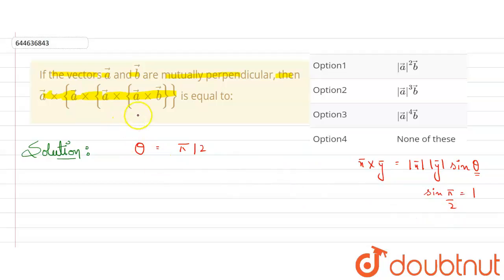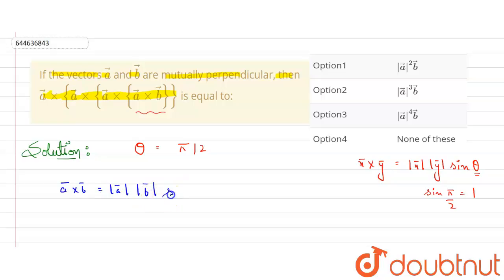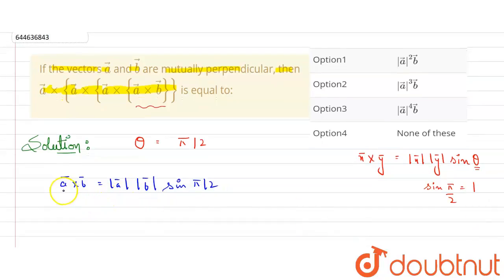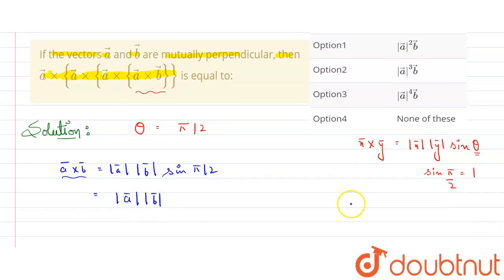Let's work on the first segment: a cross b. The value of a cross b equals magnitude of a times magnitude of b times sine of theta, which is pi by 2. Since sine of pi by 2 equals 1, a cross b simplifies to magnitude of a times magnitude of b.